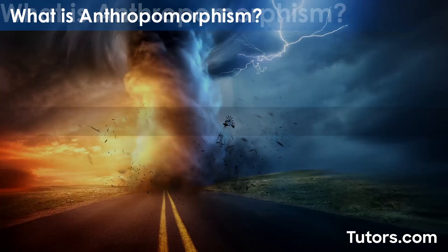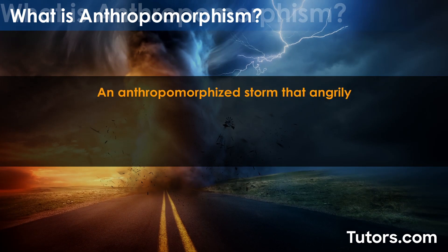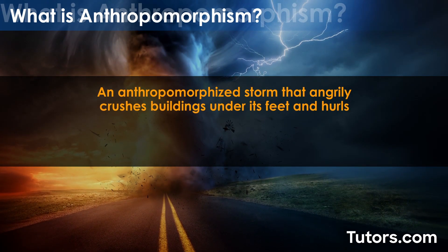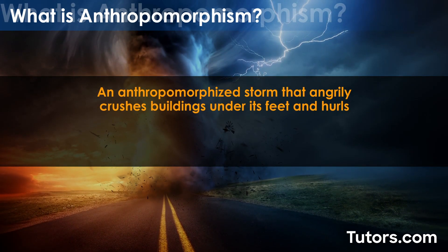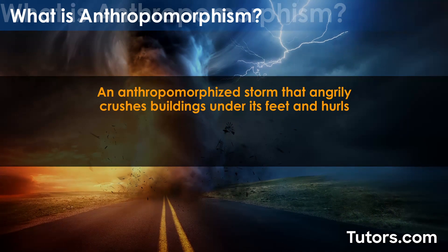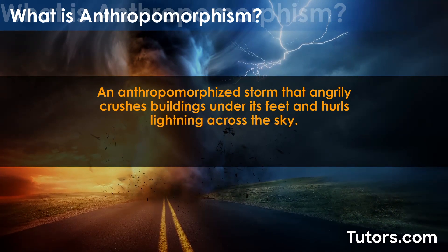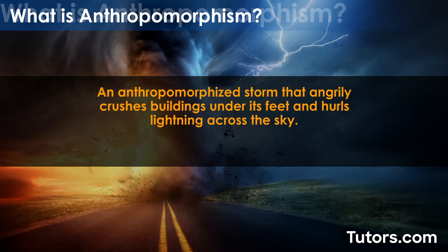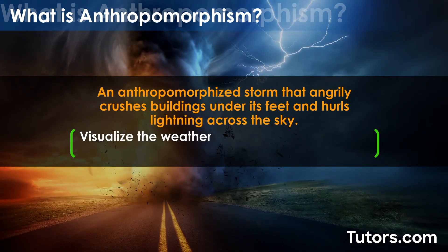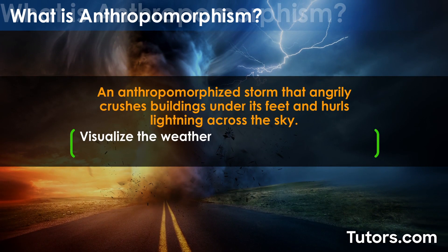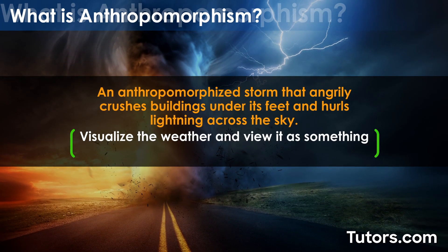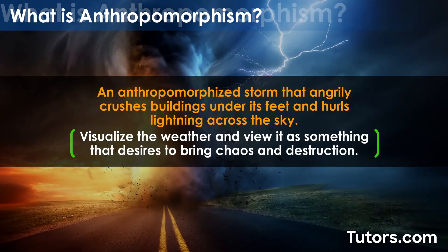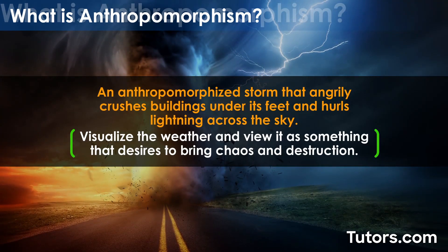For example, an anthropomorphized storm that angrily crushes buildings under its feet and hurls lightning across the sky allows readers to visualize the weather and view it as something that desires to bring chaos and destruction.